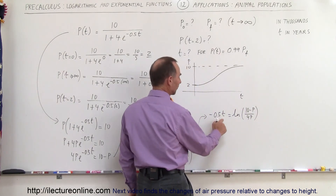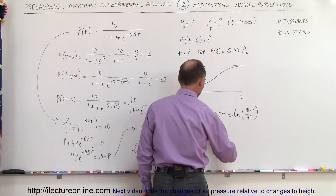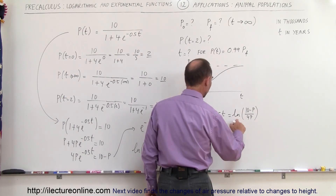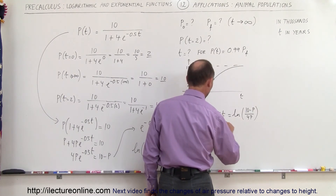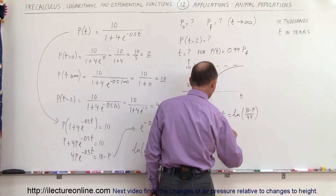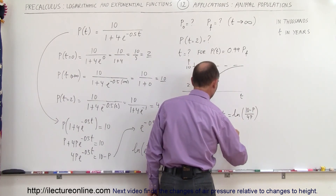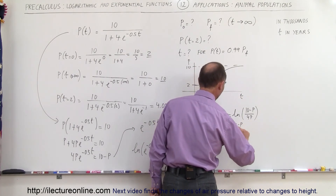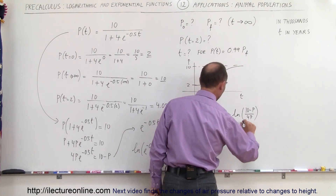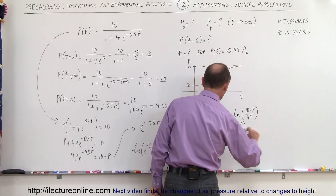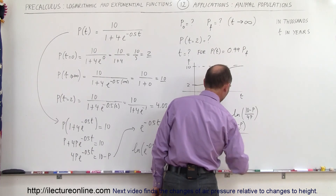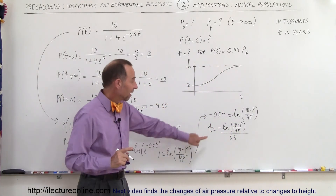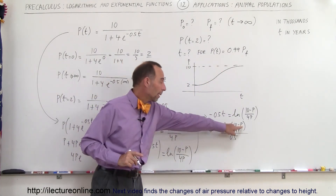Solving for t, we move the negative to the other side and divide both sides by 0.5, giving: t equals negative the natural log of (10 minus P) divided by 4P, all divided by 0.5.